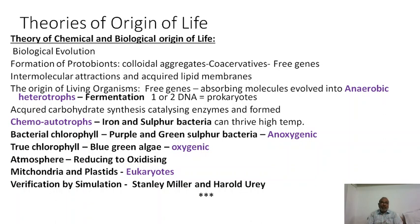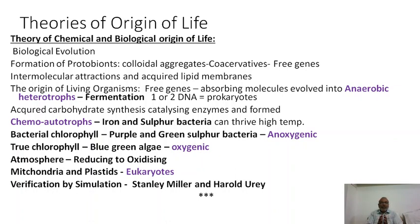These phenomena might have occurred, and the early life formed around 3.5 billion years ago. As a result, cellular organisms with a cellular structure might have formed. The first formed living organisms were heterotrophs — organisms that gather food from outside. Specifically, the first organisms were anaerobic heterotrophs, with fermentation as their source of energy production. They may have had only one or two DNA molecules and looked almost like prokaryotes.